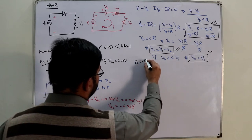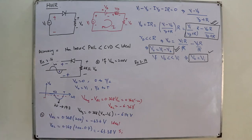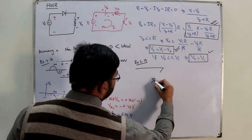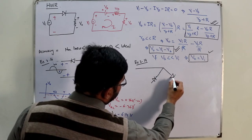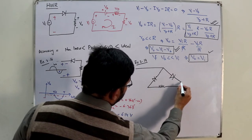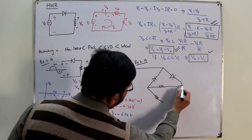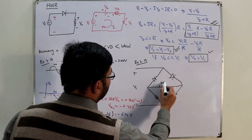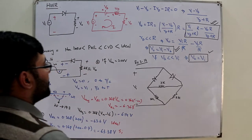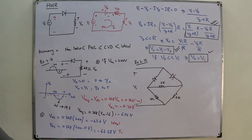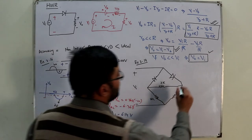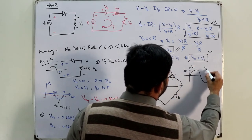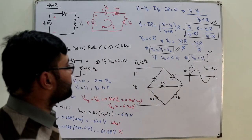Moving to Example 2.17 on the full wave bridge rectifier. The circuit has two diodes connected in specific orientations, with three 2 kilo-ohm resistors and the input applied across the terminals. The source is sinusoidal with a maximum value of 10 volts. We need to find the output waveform, DC level, and PIV rating.